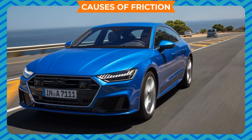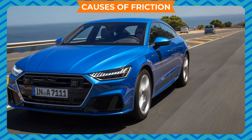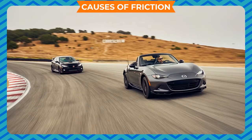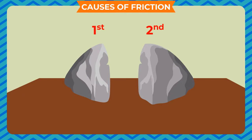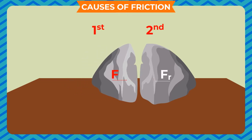If the surface on which movement has to take place is smooth, the friction experienced by an object is less. Consider two solid objects in contact with each other. Let the force F be applied on one object to slide it over the other. Then Fr, which is the frictional force offered by the other object, comes into play. The relationship between F and Fr determines whether the object will slide or not.